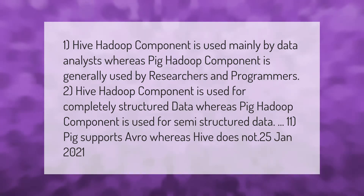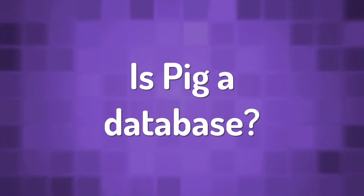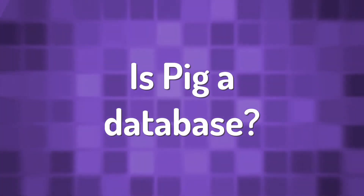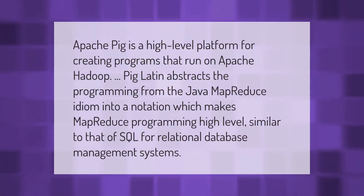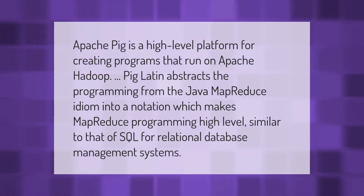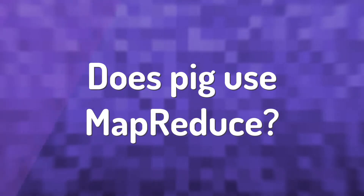Pig supports Avro whereas Hive does not. Apache Pig is a high-level platform for creating programs that run on Apache Hadoop. Pig Latin abstracts the programming from the Java MapReduce idiom into a notation which makes MapReduce programming high-level, similar to that of SQL for relational database management systems.